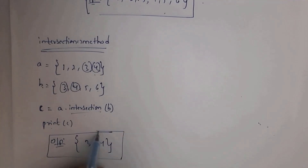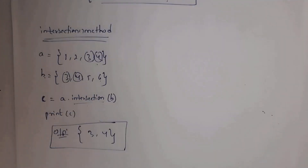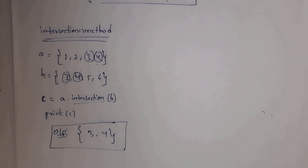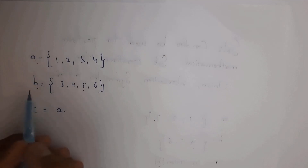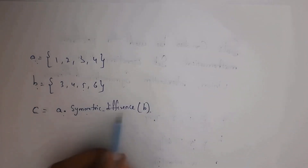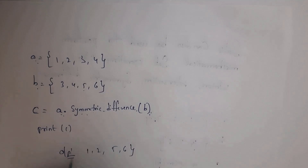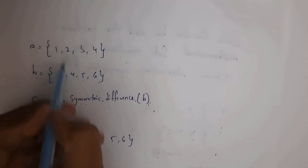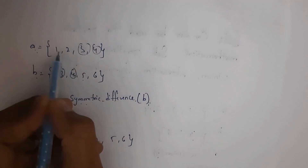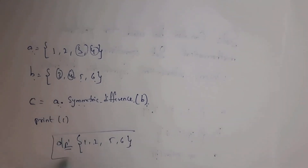Symmetric difference is opposite to intersection. Intersection prints only similar items, whereas symmetric difference prints non-similar items. Here a = {1, 2, 3, 4} and b = {3, 4, 5, 6}. I written c = a.symmetric_difference(b). Whenever you write print(c), you get output 1, 2, 5, 6. In both sets, 3 and 4 are similar items, and 1, 2, 5, 6 are non-similar — so the output is 1, 2, 5, 6.